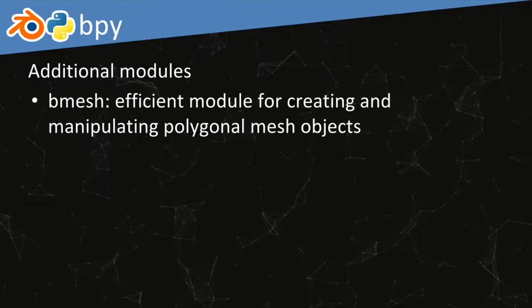There are also a few other modules you can import within Blender. Bmesh is a more recent module that is very efficient for the manipulation and creation of polygonal meshes. Polygons in 3D are objects comprised of three main types of elements: vertices, edges, and faces. Most of what you know from 3D printing or games uses polygons. There are other types of geometry like NURBS, but Bmesh helps you work specifically with meshes.